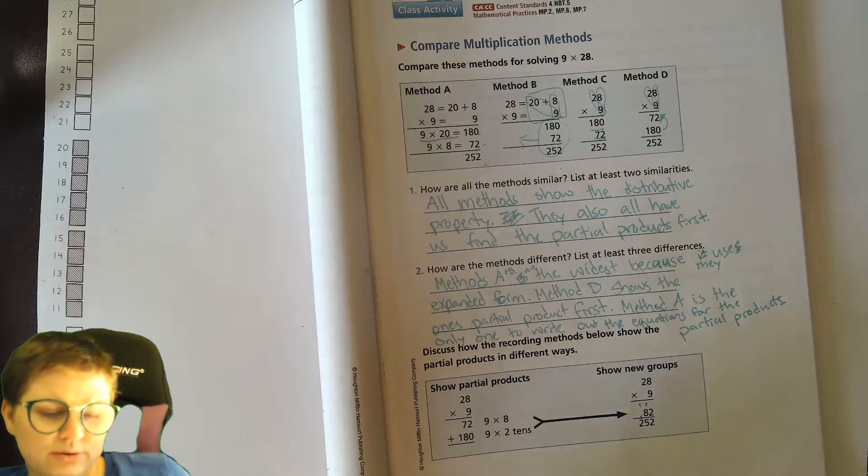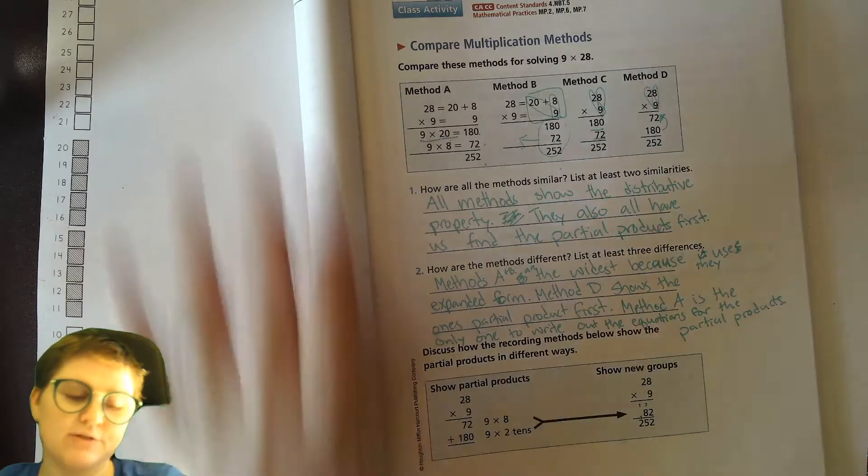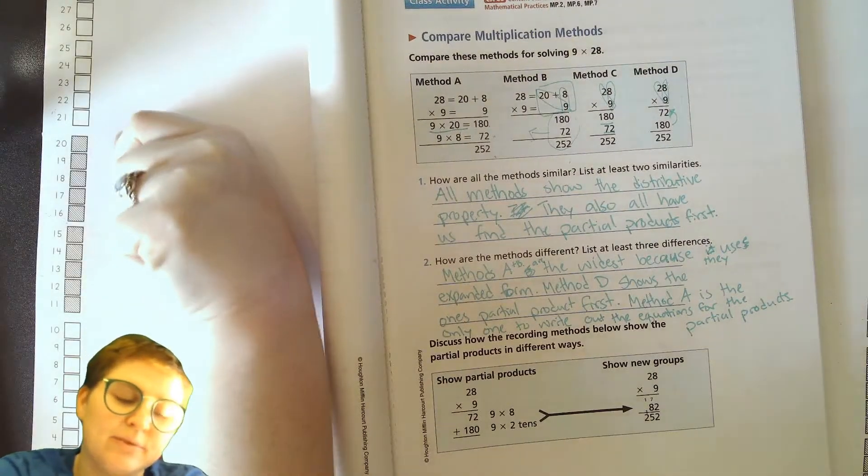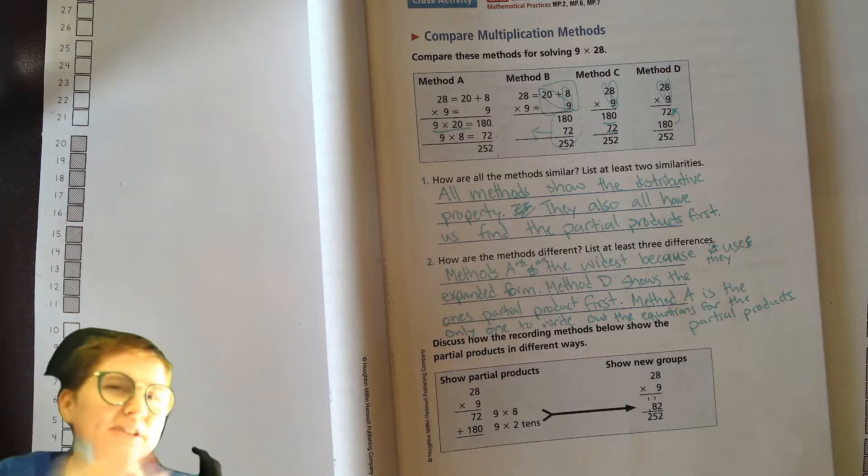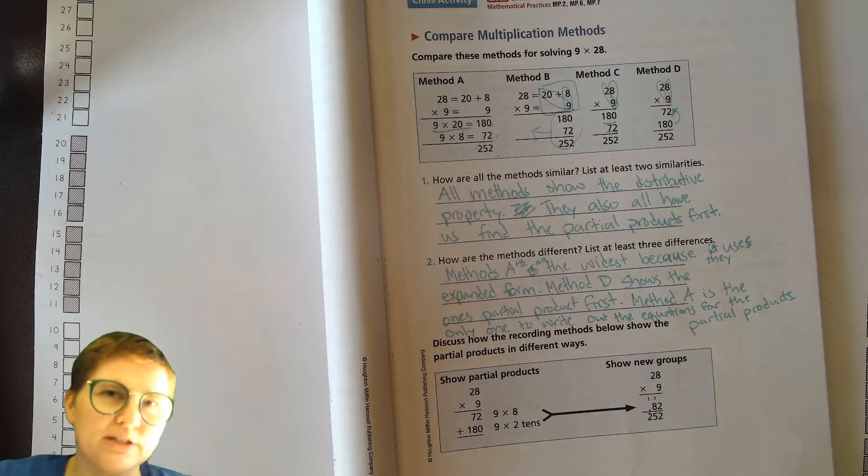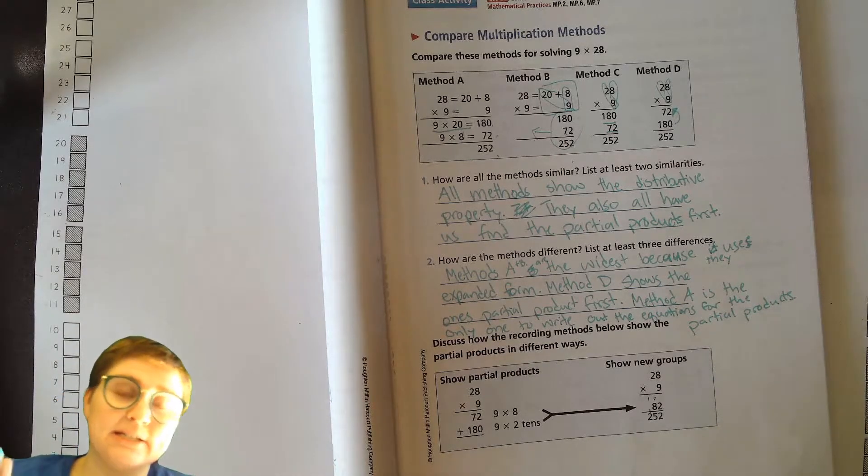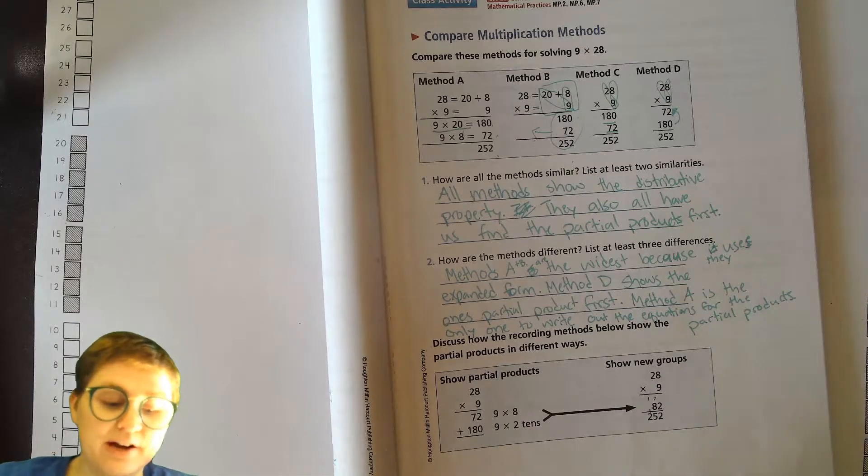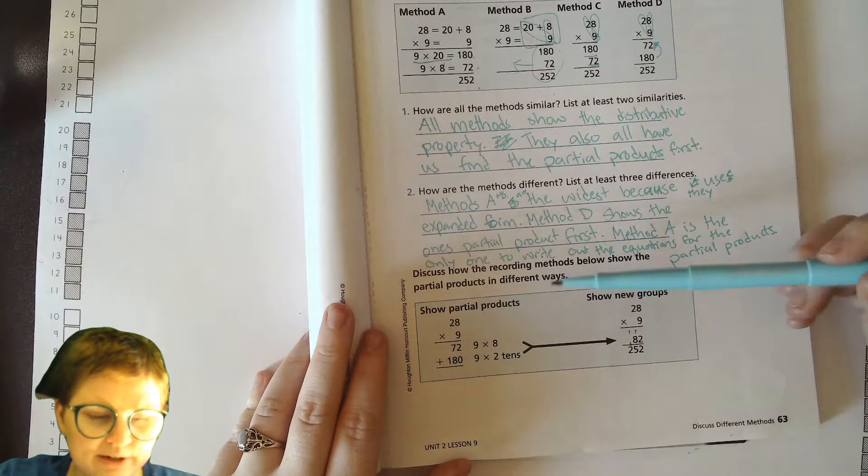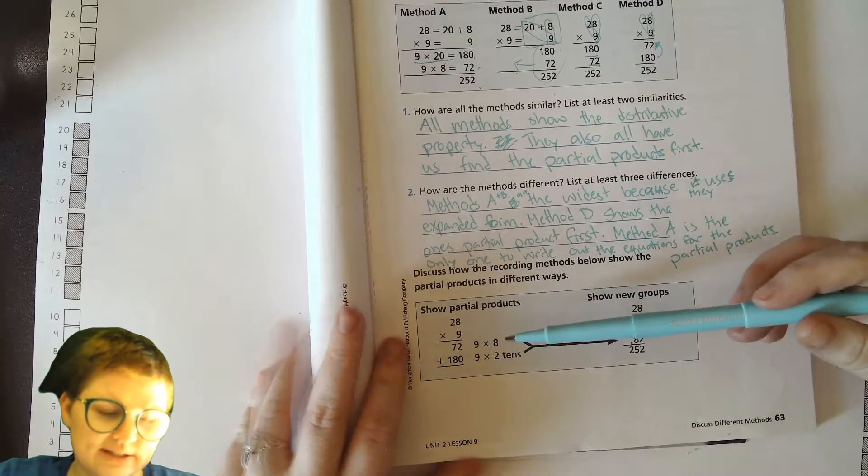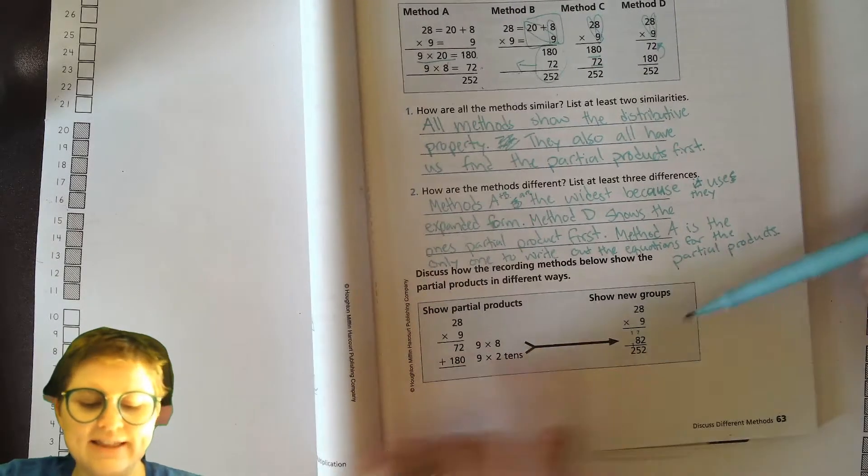Okay, so you know that's the most important thing is in math—you're remembering that when you have different methods, a lot of it is just about preference, what makes sense to you, and it's good to have a wide, a broad set of tools that you can always draw from when needed. With some circumstances, one method might be better than another. All right, so discuss how the recording methods show the partial products in different ways. So this is what we've done before—this is the 9 times 8, 9 times 2 tens.